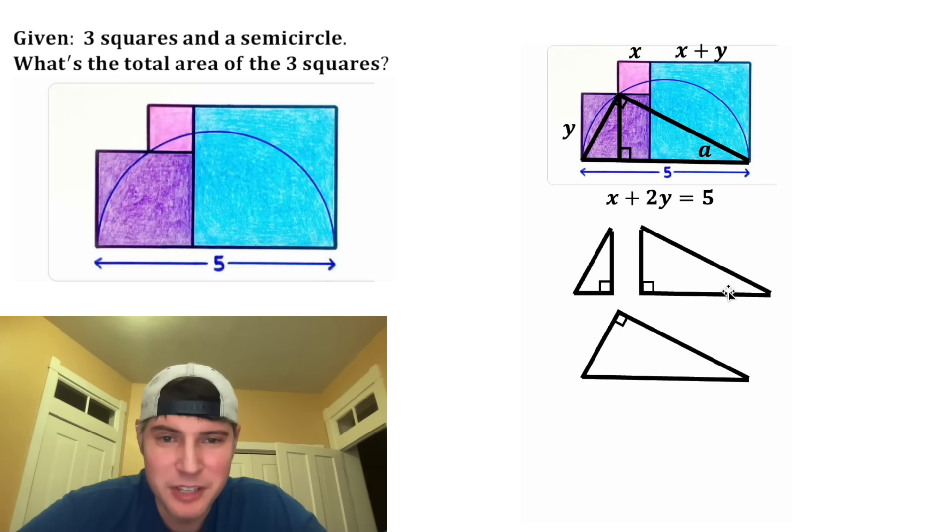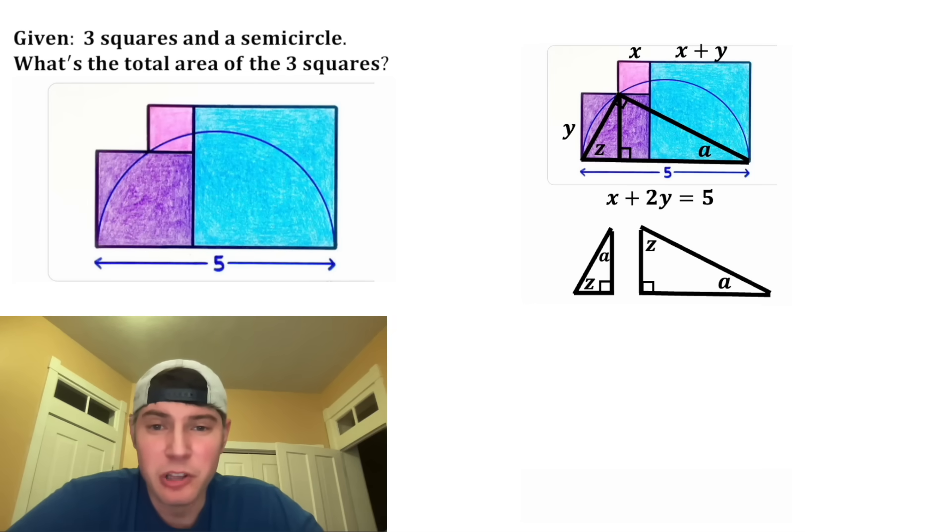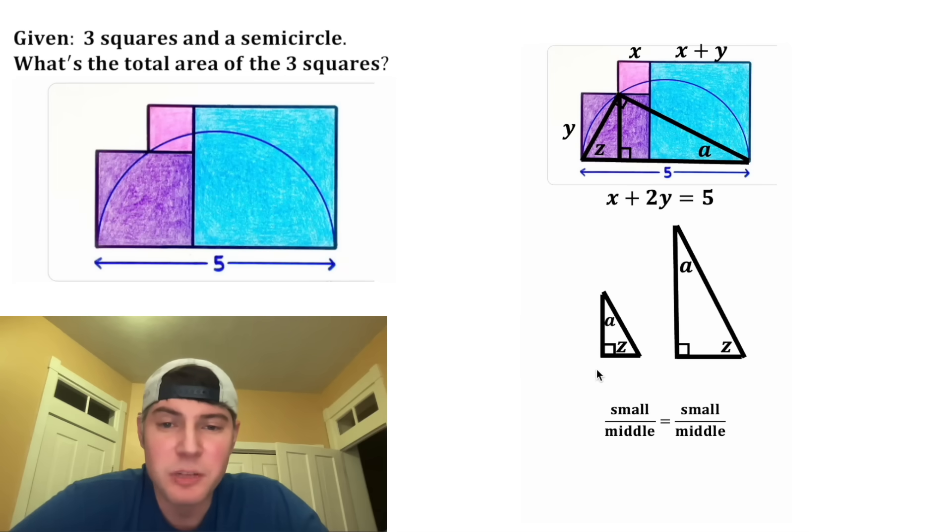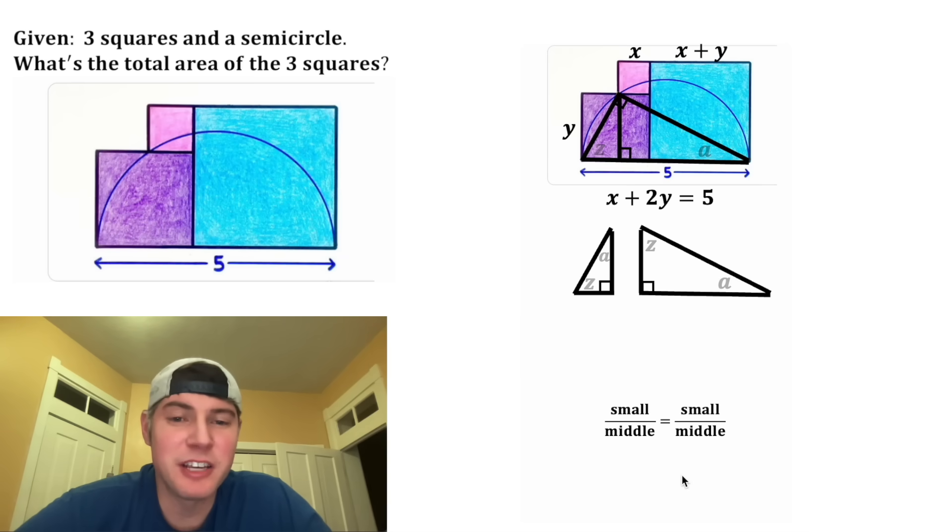Let's label this angle A. Well, that's going to be the same thing as this angle here on both of these two triangles. Now let's call this angle right here Z, and that's the same angle as these two on these two triangles. Now looking at this bottom triangle, we know that A plus Z is equal to 90. So that means that if this is A, this angle up here must be Z. And if this is Z, this angle right here must be A. So since all these angles are the same, these are three similar right triangles. That means if we were to align two of them up like this, we could set up a proportion where the smaller side divided by the middle side of one triangle is equal to the small side divided by the middle side of the other triangle. And this is going to enable us to get our other equation.